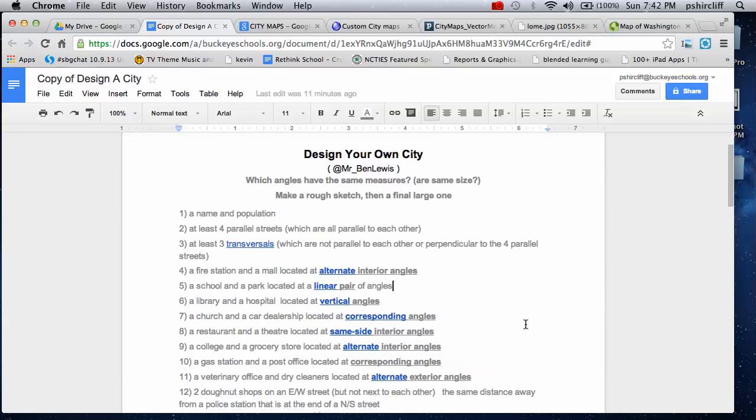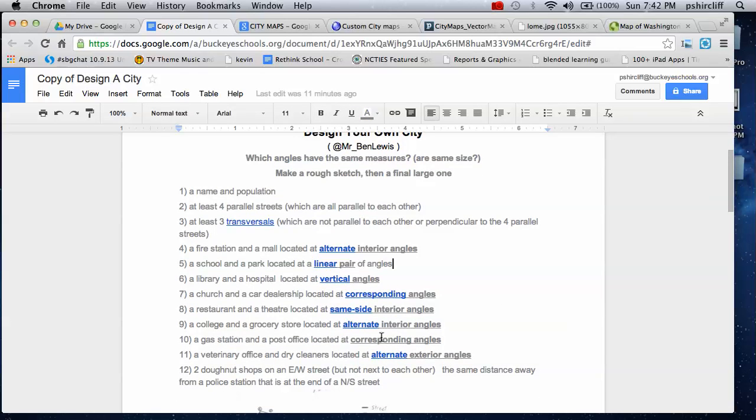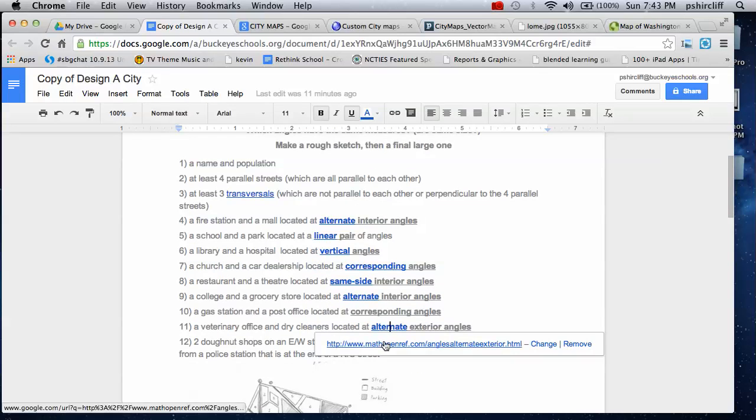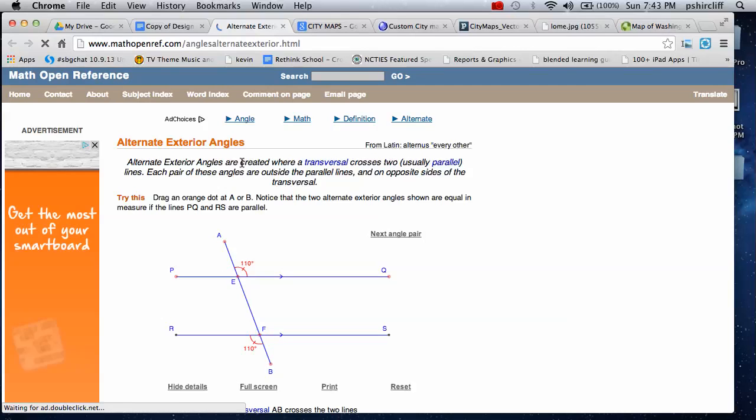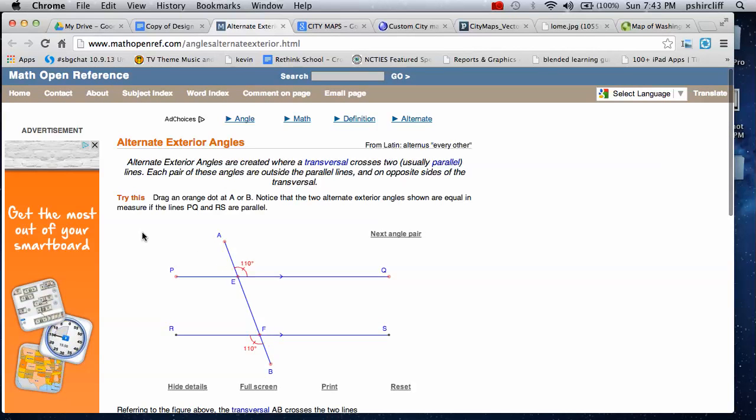Alternate interiors are already talked about. Corresponding angles we've talked about. Alternate exterior - alternate just means on opposite sides of the line. Look at where these angles are going.